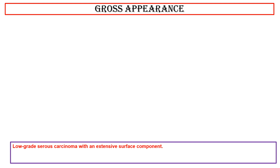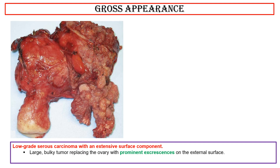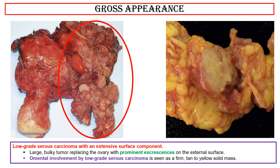Gross appearance: Low-grade serous carcinomas with an extensive surface component. This photo shows a large bulky tumor, low-grade serous carcinoma, replacing the ovary with prominent excrescences on the external surface. Omental involvement by low-grade serous carcinoma is seen as a firm, tan-to-yellow solid mass.